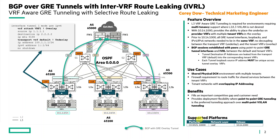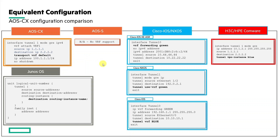Feature support is for the CX 8325 and the 10K platforms as of this release. This feature closes an important gap with the CX 10.14-1000 release. You can see the configuration syntax for AOS CX with a transport VRF default. For the AOS-S switch line there's no VRF support. For all other platforms — JunOS, Cisco IOS, NXOS, and H3C — there is an equivalent configuration shown here, so if you need to interoperate with these devices, this is how you would use the feature.